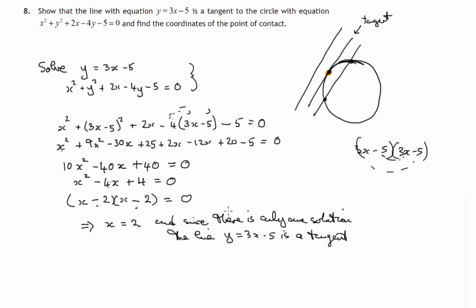And we're asked to find the coordinates of the point of contact. Well we already know that x is 2. So y is equal to 3 times 2 minus 5. Just substitute x equals 2 into the equation of the tangent. So that'll be 6 minus 5 is 1.